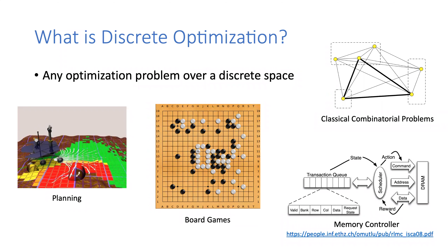A fourth example is a memory controller. If your cache is full and your program requests another piece of memory, you have to evict something from your cache. A typical scheduler chooses one of the locations in the cache to evict — again, a discrete choice. People have thought about using learning algorithms to learn a better memory controller. Those are just examples of discrete optimization problems.